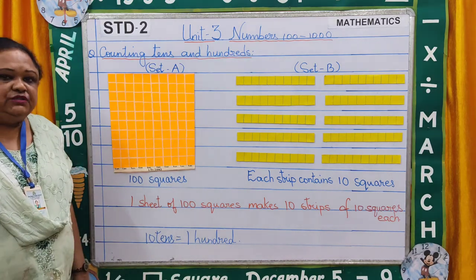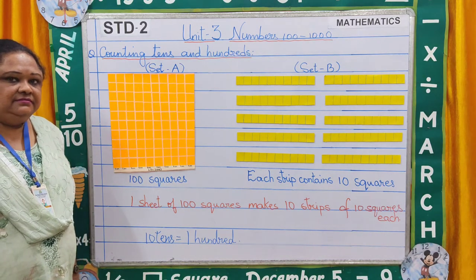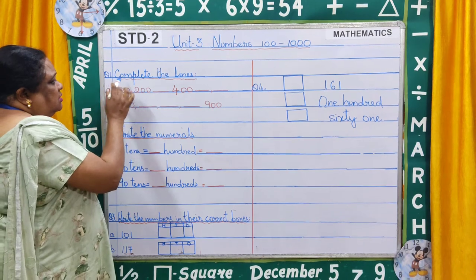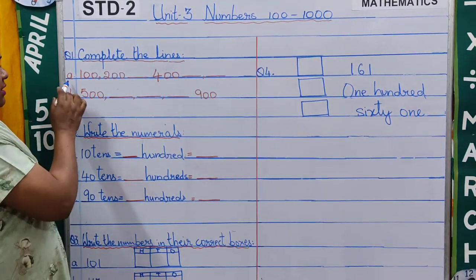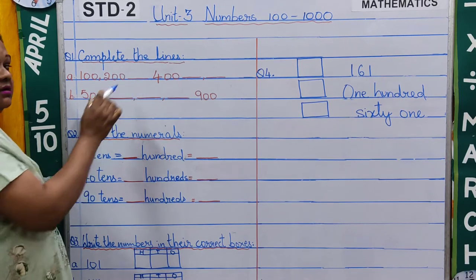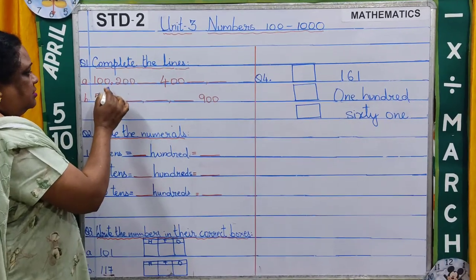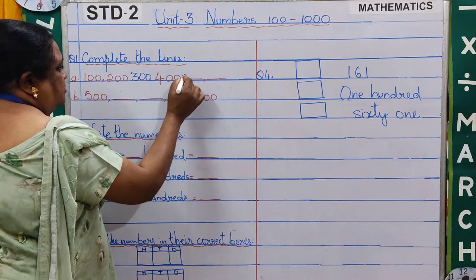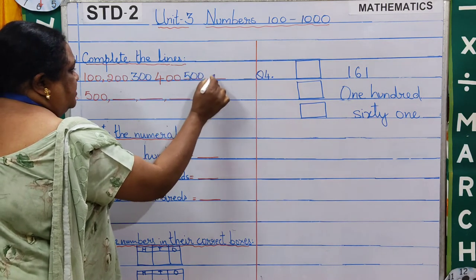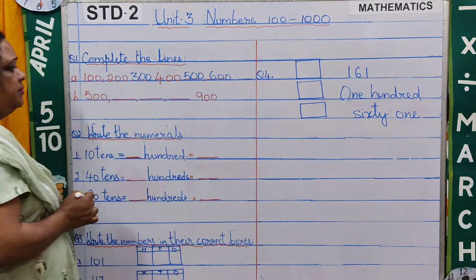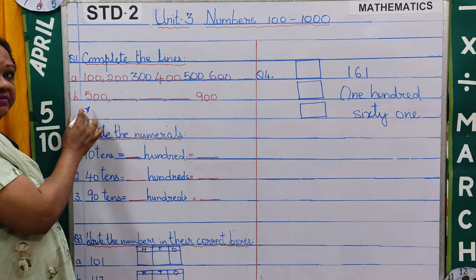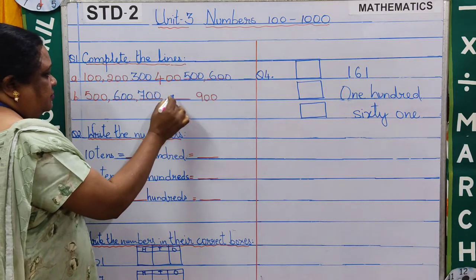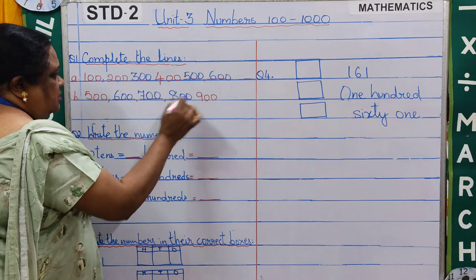I hope you have understood this thoroughly, children. Now, coming to the first question — complete the lines. A: we are going to complete the lines by hundreds: 100, 200, 300, 400, 500, 600. Number B: we start with 500, 600, 700, 800, and 900.